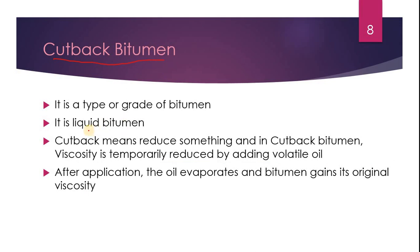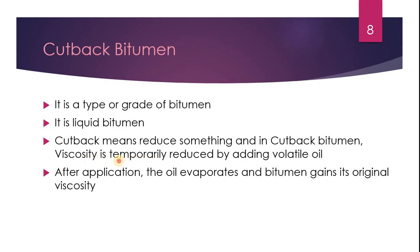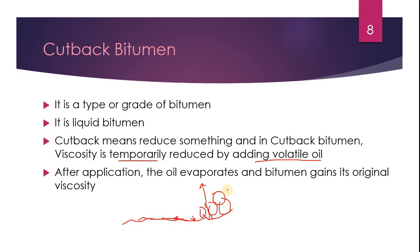Cutback bitumen is a type of bitumen — it is liquid bitumen. Cutback means to reduce something, so cutback bitumen means reduction of viscosity. When the viscosity of bitumen is reduced by adding a volatile liquid, it becomes cutback bitumen. The viscosity is temporarily reduced — not permanently. After application, the volatile oil evaporates, and bitumen regains its original viscosity and strength, so the properties of bitumen are not permanently changed.